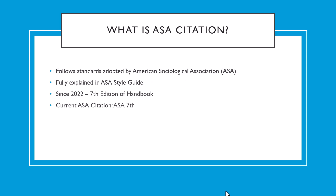To start out with, what is ASA citation? The ASA citation style is laid out in the ASA style guide, which follows the standards adopted by the American Sociological Association. This citation style is used most commonly by programs in the social sciences, such as sociology and criminology. As of 2022, the ASA style guide is in its 7th edition, so the version of ASA citation we will be covering in this video is ASA 7th.